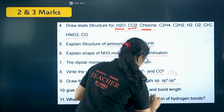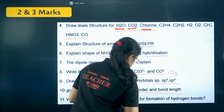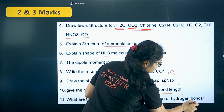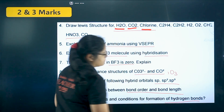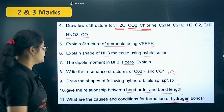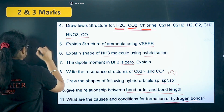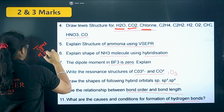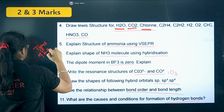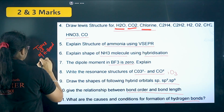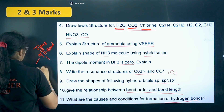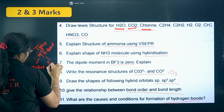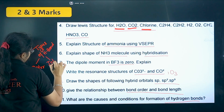Give the relationship between bond order and bond length. Next, what are the causes and conditions for formation of hydrogen bonds? This is important, and also the types of hydrogen bond — intermolecular and intramolecular — you should prepare.